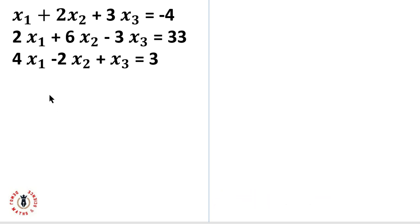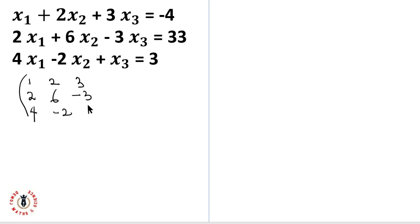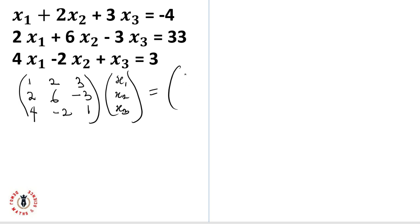In using the Gaussian elimination method, the first thing is we'll be changing this set of equations into our matrix form, so that I'll have 1, 2, 3 in the first row; 2, 6, minus 3 — picking the second equation; then 4, minus 2, and 1. So I'll have my x1, x2 and x3 equals to minus 4, x3 and here will be 3. I've changed the set of equations into a matrix form.